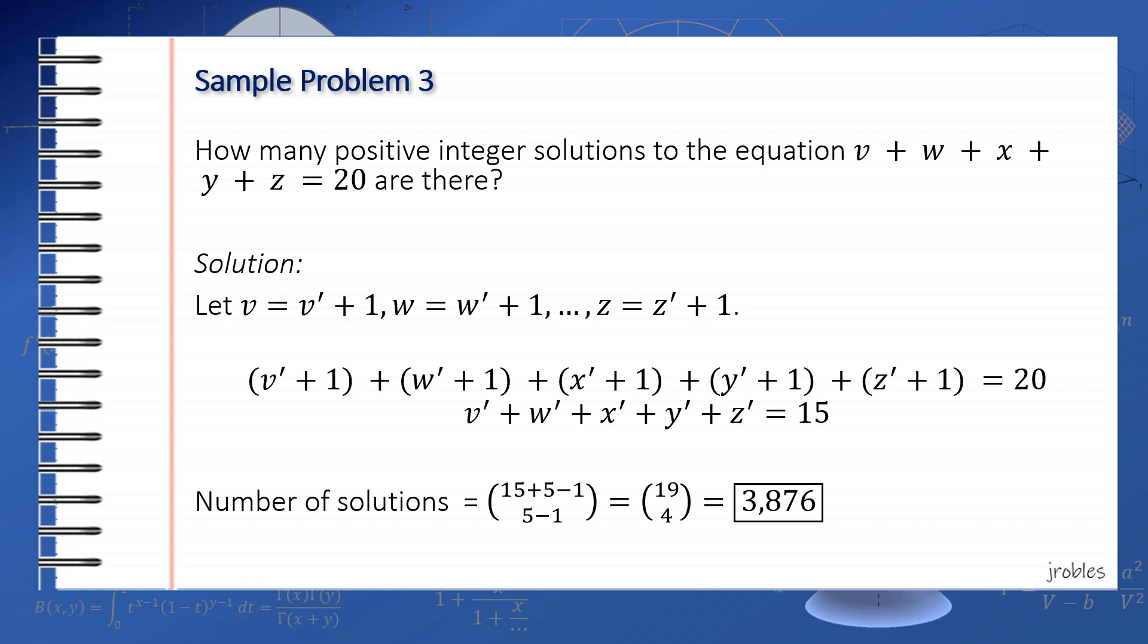If the variables need to be greater than 2 instead, then we use the substitution v = v' + 2. On the other hand, if the variables can be as low as negative 3, then we use the substitution v = v' - 3.